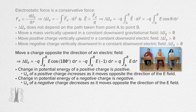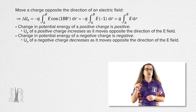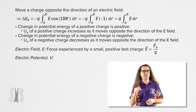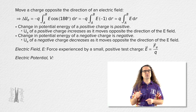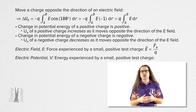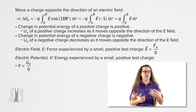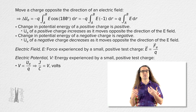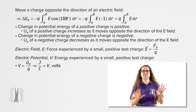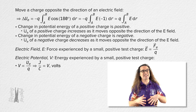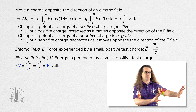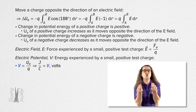There is no gravitational analogy to negative charge — there is no negative mass — so we are not used to this concept of the change in potential energy depending on whether the charge is positive or negative. Next, we need to define electric potential. Just like we define electric field in terms of the force experienced by a small positive test charge, we define electric potential in terms of the energy experienced by a small positive test charge. Electric potential equals electric potential energy divided by charge. The units for electric potential are joules per coulomb, or volts. Note that the symbol for electric potential and the symbol for the unit volts are both a capital V.